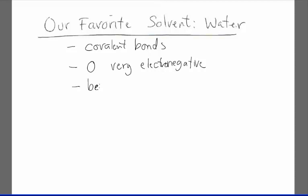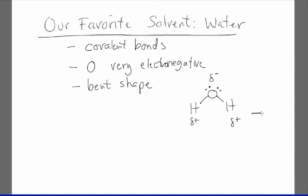And water has a bent shape. The oxygen has two lone pairs on it, and because oxygen is so electronegative, this side of the molecule is partially negative, and the hydrogen sides are partially positive. We can write that with little deltas, and we can also indicate that directionality with an arrow going from the positive side to the negative side. We say that it's polar because it has this net dipole, and we say it has a dipole moment.